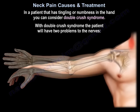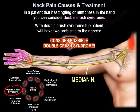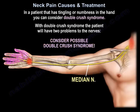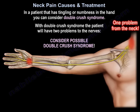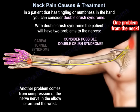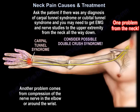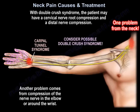In a patient with tingling or numbness in the hand, consider double crush syndrome — meaning the patient has two problems affecting the nerves. One problem comes from the neck, and another comes from compression at the elbow, such as cubital tunnel syndrome, or around the wrist, such as carpal tunnel syndrome. Ask about any prior diagnosis of these conditions, and nerve conduction studies of the upper extremity from the neck all the way down may be needed.